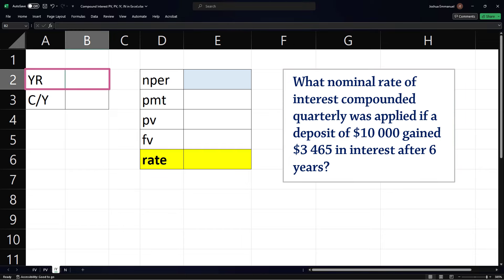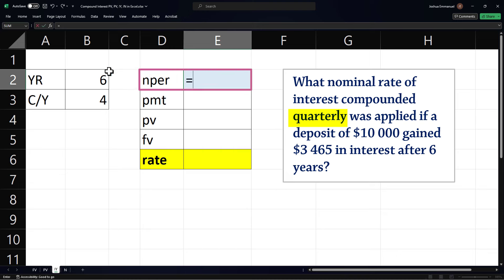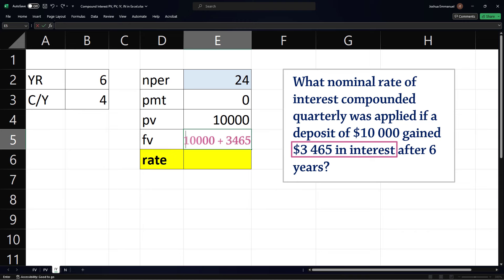So for years, we enter 6 here. Interest is compounded quarterly, so CY is 4. Number of periods is years times CY. Periodic payment is 0. Present value is $10,000. Since this $3,465 is interest only, then the future value equals $10,000 plus $3,465, which gives $13,465.